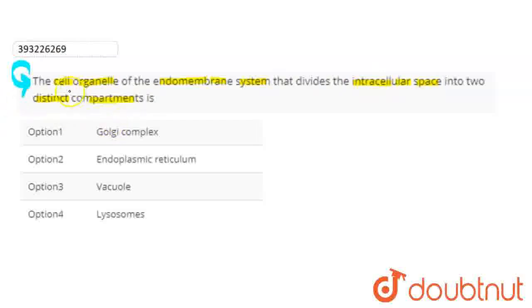So in this question, we have given options - which is the cell organelle of the endomembrane system which divides the intracellular space into distinct compartments. So let's start with the options here, the first thing,